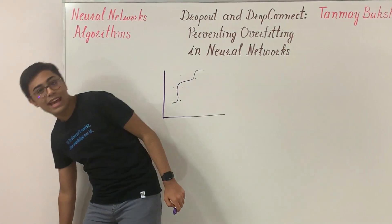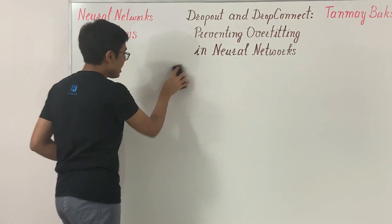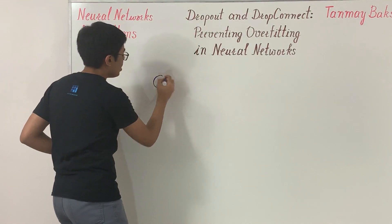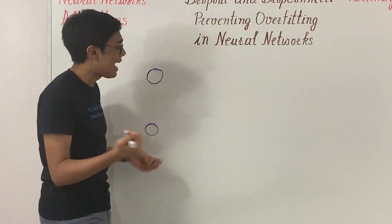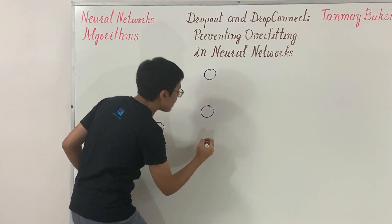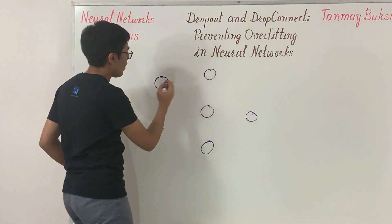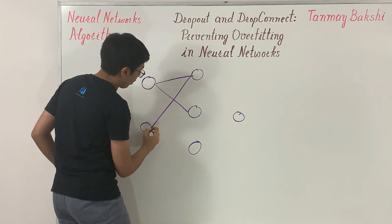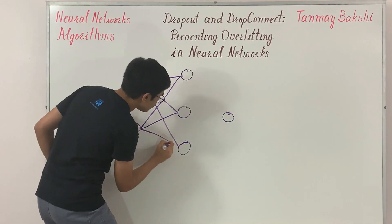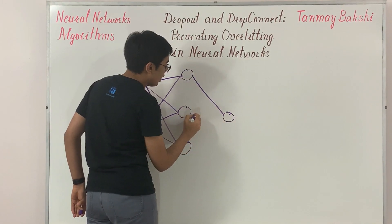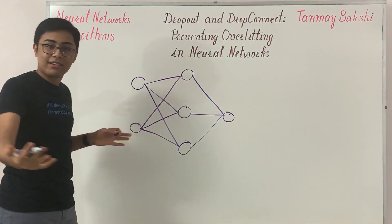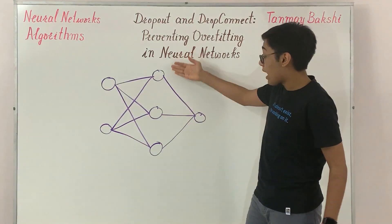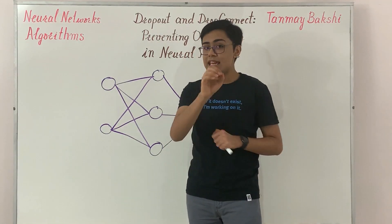Dropout is what we're going to talk about today. Let's take a look at how it works. Say you've got a simple multi-layer perceptron neural network — a very simple structure with two input neurons for the XOR task, three hidden neurons, and one output neuron. If instead you had thousands of inputs, multiple layers, and hundreds of nodes per layer, you'd have many weights.